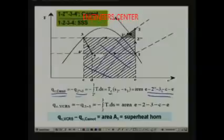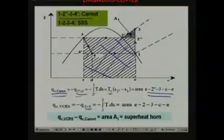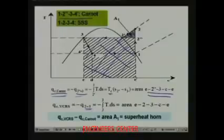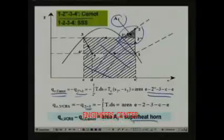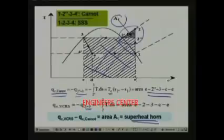Heat rejection in the standard vapor compression refrigerant cycle is heat rejected during process 2 to 3 — this area plus this area, equal to area E2 3 CE, the entire area. The difference between heat rejection of the VCC and the Carnot cycle is area 2 2 dash 2 double dash, or area A1, known as the superheat horn. This arises because we replace the isothermal heat rejection of the Carnot cycle with an isobaric heat rejection process.